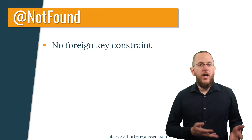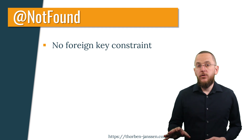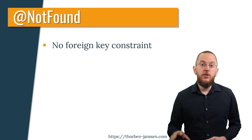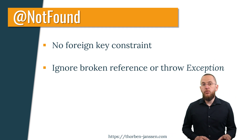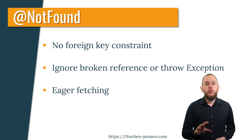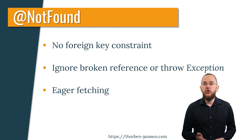Annotating an association with Hibernate's proprietary @NotFound annotation has three effects. Hibernate assumes that the table model doesn't define a foreign key constraint for that association and doesn't generate one if it generates the table model. You define whether Hibernate shall ignore broken foreign key references or throw an exception. And Hibernate fetches the association eagerly even if you set its fetch type to lazy. I will get into more details about Hibernate's enforced eager fetching in the next part, but first let's take a closer look at the @NotFound annotation and the two supported not found actions.